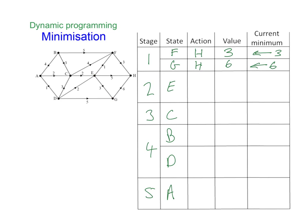The next one I'm going to look at is E. E has 3 options: F, G, and H. If I go E to F, that's going to have a weight of 1. And if I'm now at F, I know that my minimum weight from F is 3. So I've got 1 plus 3, which equals 4. We can see that from the graph as well — E to F is 1, and my minimum from F is 3, giving us 4.